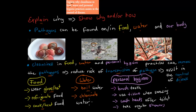Boiling water kills pathogens, so fewer pathogens enter our body. Chlorinated water works the same way — kills pathogens, meaning less enter our body. For personal hygiene — brushing our teeth means we have fewer pathogens in our mouth. Using a tissue when sneezing means we don't transmit bacteria in our snot. Washing our hands after the toilet removes bacteria from our feces or hands. And taking regular showers kills anything that might be on our skin.